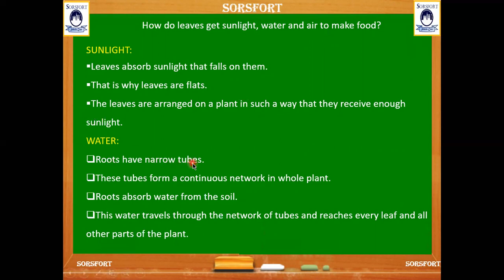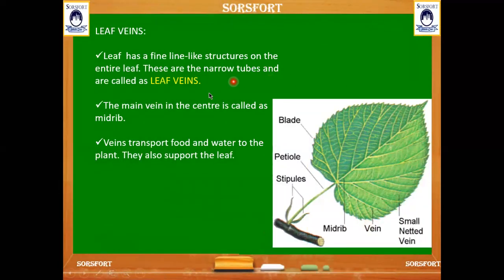Roots absorb water from the soil. Roots have narrow tubes that form a continuous network throughout the whole plant, which helps supply water to all parts. The water travels through this network of tubes and reaches every leaf and all other parts of the plant. These are the leaf veins — fine line-like structures on the entire leaf which are narrow tubes.